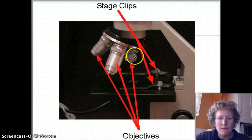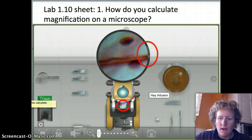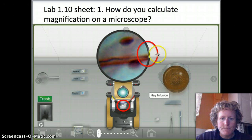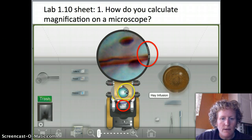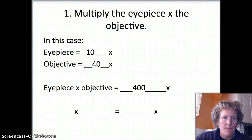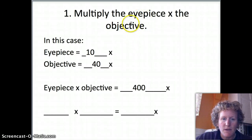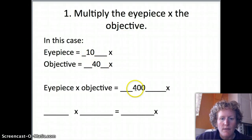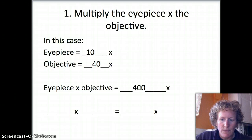We also need to know the magnification of the objective we're using — we can only use one objective at a time. The magnification on the eyepiece is ten times. On the high power objective in this screenshot, the magnification is forty times. If we multiply ten times forty, that equals four hundred — meaning something appears four hundred times larger than it would with the naked eye.